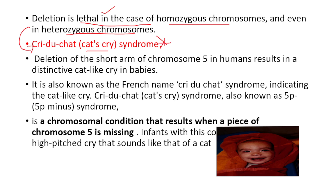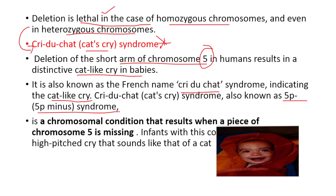The deletion of the short arm of chromosome 5 in humans results in a distinctly cat-like cry in babies. This is known as Cri-du-chat syndrome, also called 5P or 5P-minus syndrome. Cri-du-chat syndrome occurs as a result of deletion.